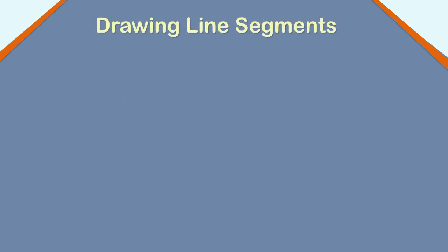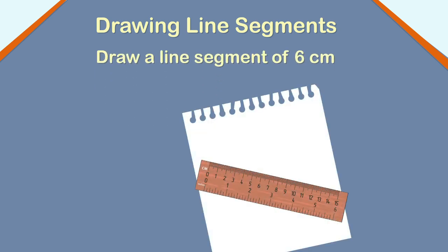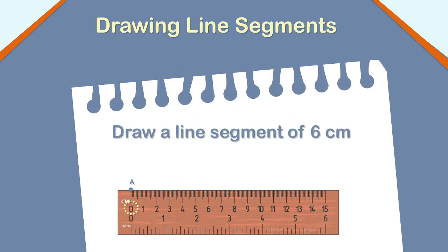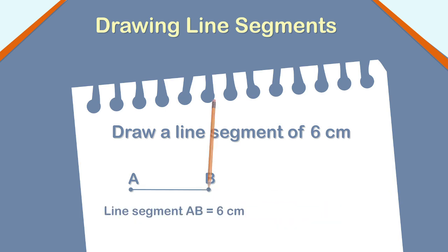Now, I will tell you how to draw a line segment of any given measure. Say, we need to draw a line segment of 6 centimeter. Follow these steps. Place the ruler on the paper and mark a point against 0 centimeter. Name the point as A. Count from 0 centimeter till 6 centimeter and mark a point B at 6. Hold the scale firmly and join a straight line segment to join points A and B. Following the above steps, we can draw a line segment of any given measure.